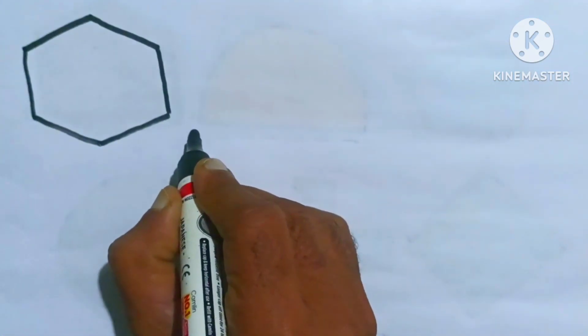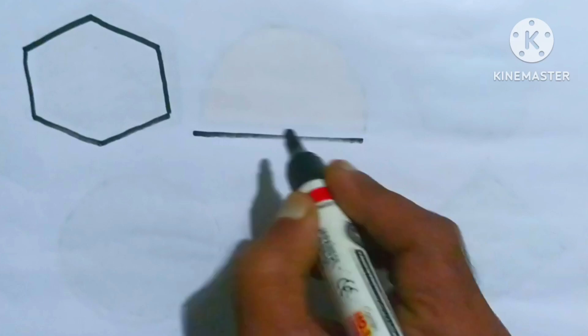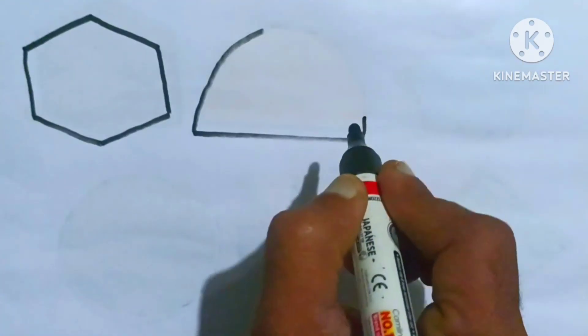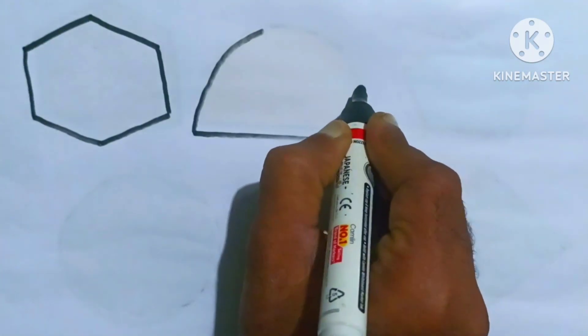Hexagon, semicircle. We are drawing a semicircle shape, kids. It's a semicircle.